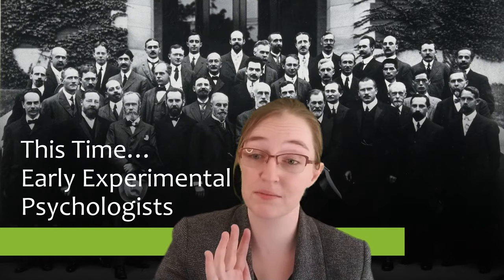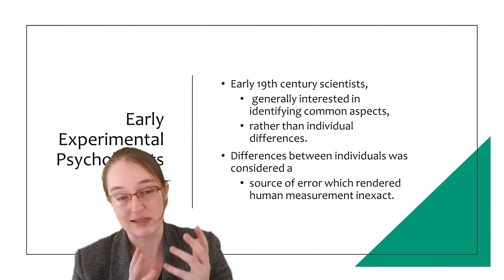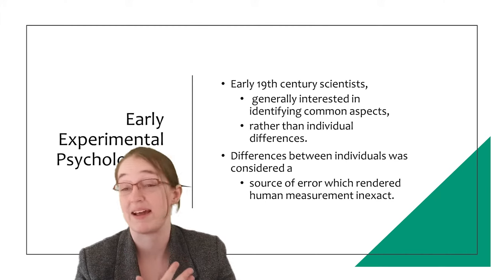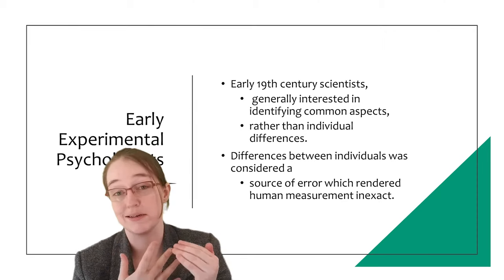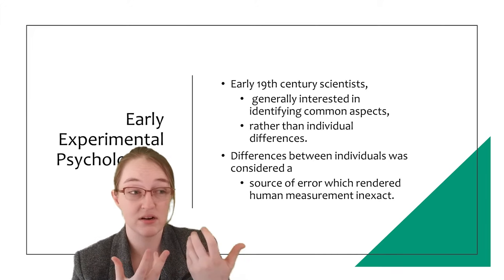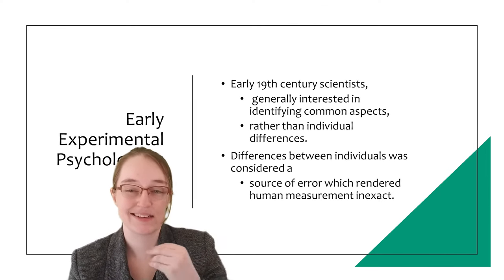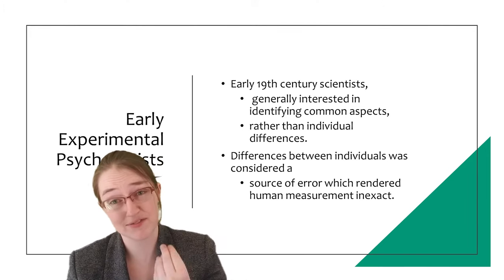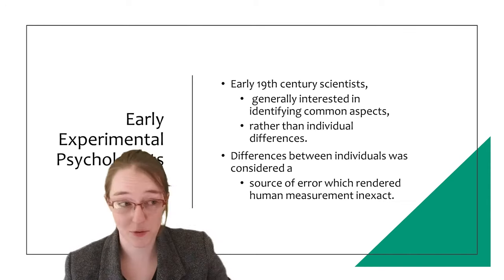Early experimental psychologists — these 19th century scientists — were generally interested in identifying the common aspects of people rather than individual variation. They considered differences between individuals to generally be a source of error that rendered any attempt at measuring humans inexact. In other words, they viewed differences between people as a nuisance that needed to be corrected for.